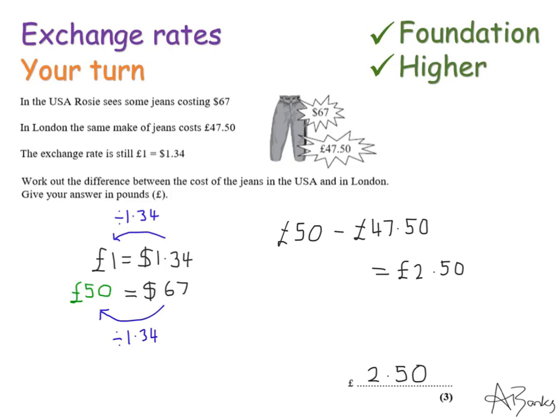Here's the full solution. So in this question it was sensible to change the cost of the jeans in the USA, so the $67 into pounds, because it actually asks you give your answer in pounds. So I converted the $67 into £50 and then worked out the difference. It's actually not asking where it's cheaper, it's just asking for this difference. You could have converted the £47.50 into dollars then worked out the difference then converted the difference back into pounds. That would be a more complicated way around it, but either way the correct answer is £2.50. Thank you for watching.